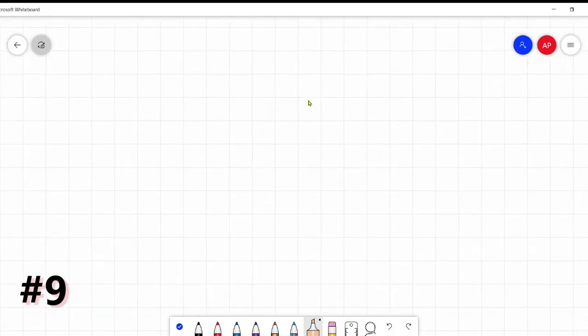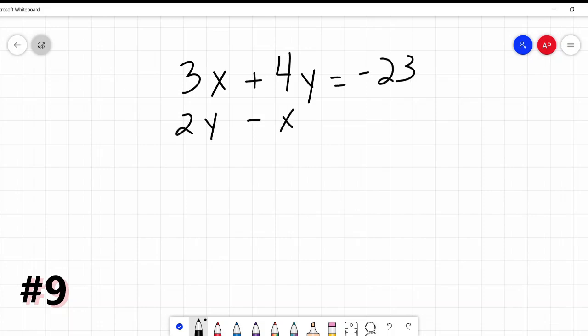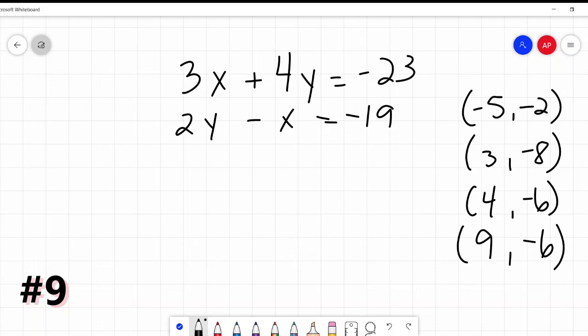Right on to number nine. We are given these two equations: 3x + 4y = -23 and 2y - x = -19, and they want you to get the solution to the system of equations. We are given these answers: (-5, -2), (3, -8), (4, -6), and (9, -6).